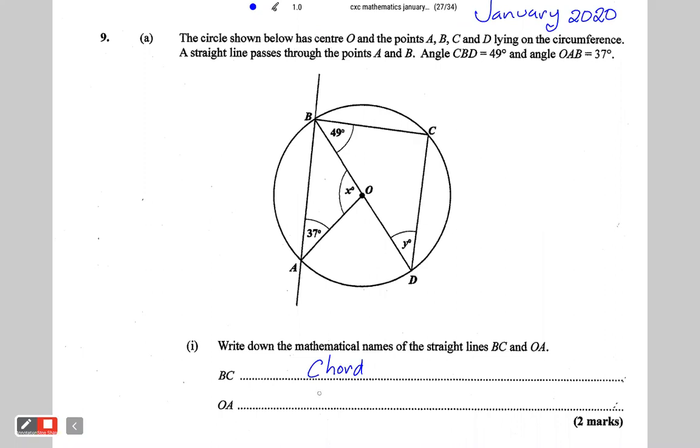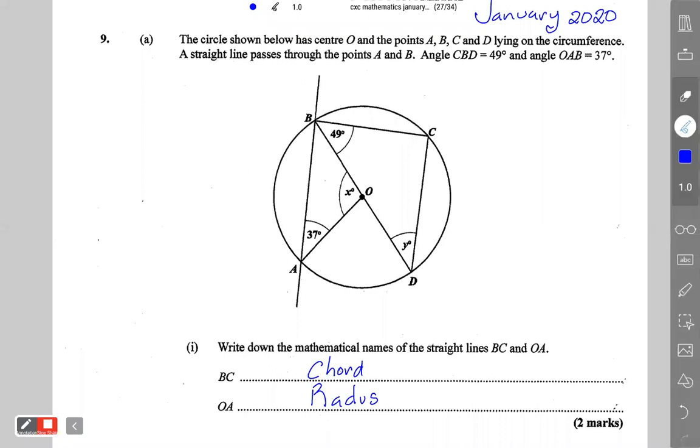OA is a radius. And that would be any straight line drawn from the center of the circle to the circumference.